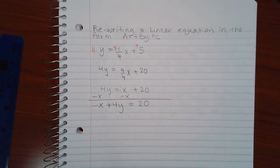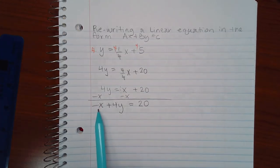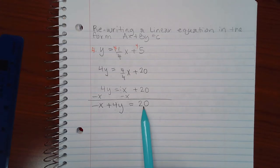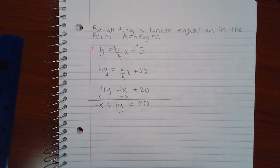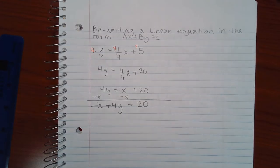I almost have what I need. Notice that a is the integer negative 1, b is the integer positive 4, and c is the integer 20. However, the a is negative right now.